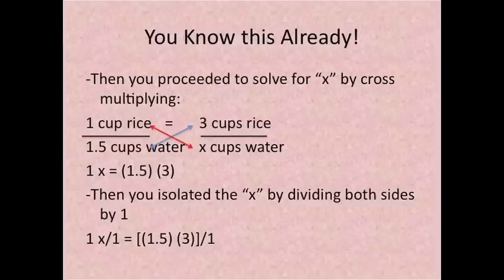Then you isolated the x by dividing both sides by 1. So we know that dividing by 1 is really pointless but just so that you know what's going on. So 1 divided by 1 is 1 so that's just x equals 1.5 times 3 divided by 1. It's the same thing.